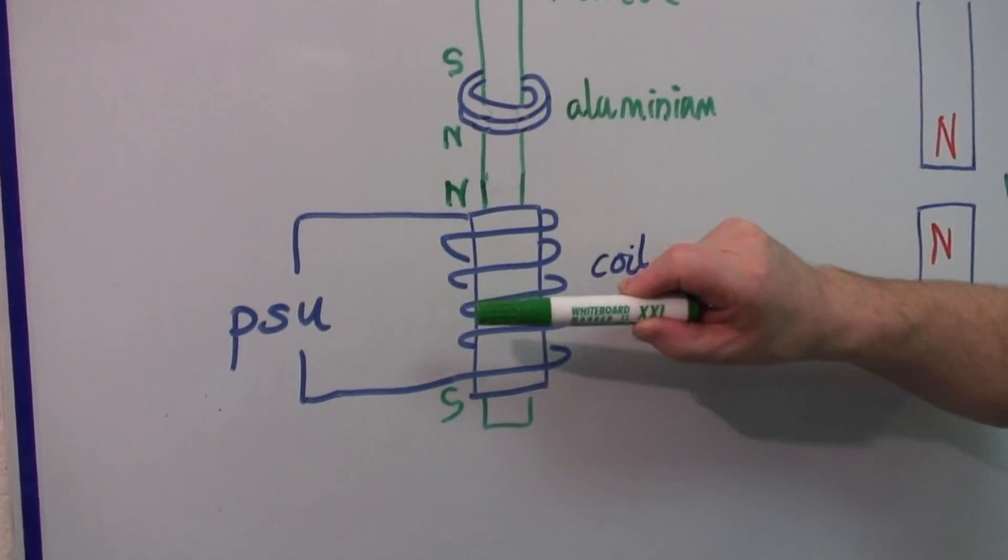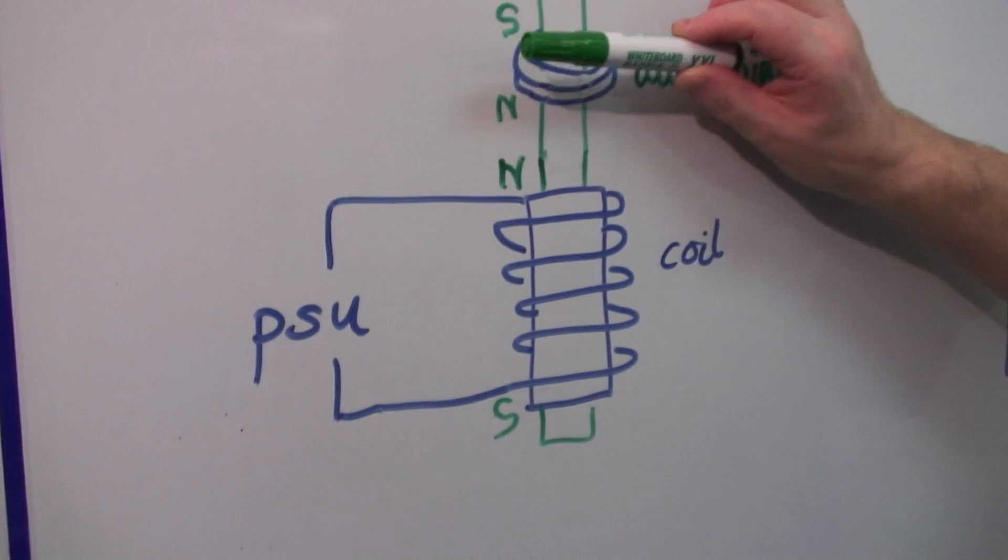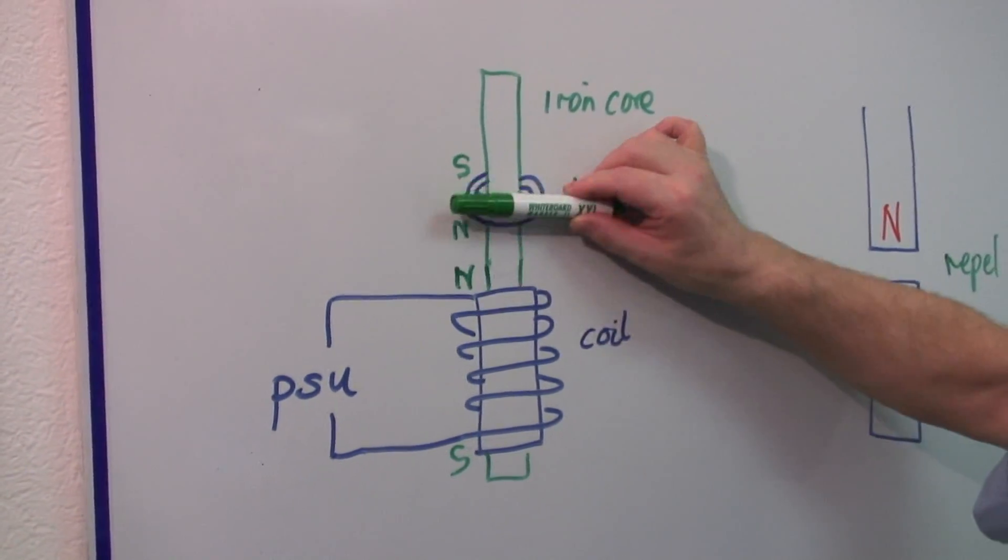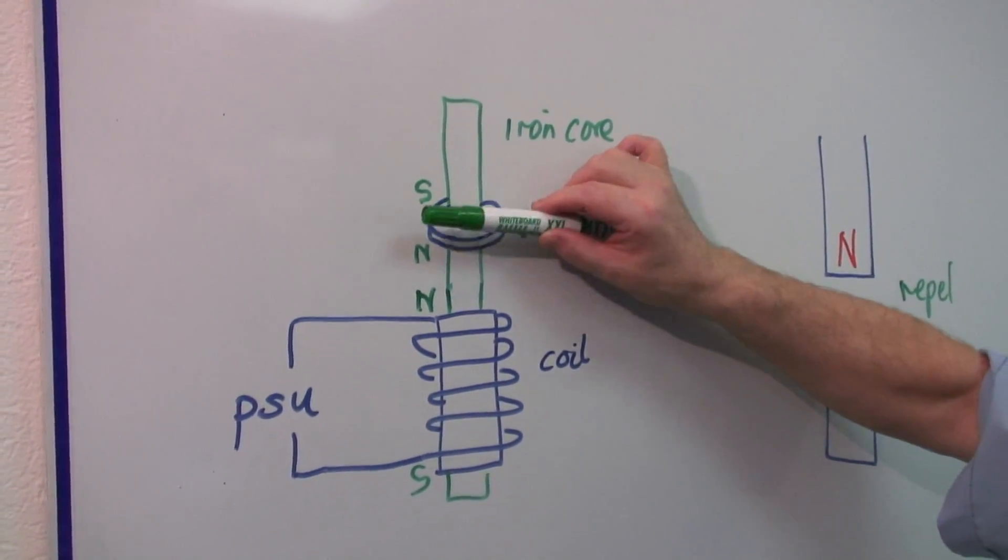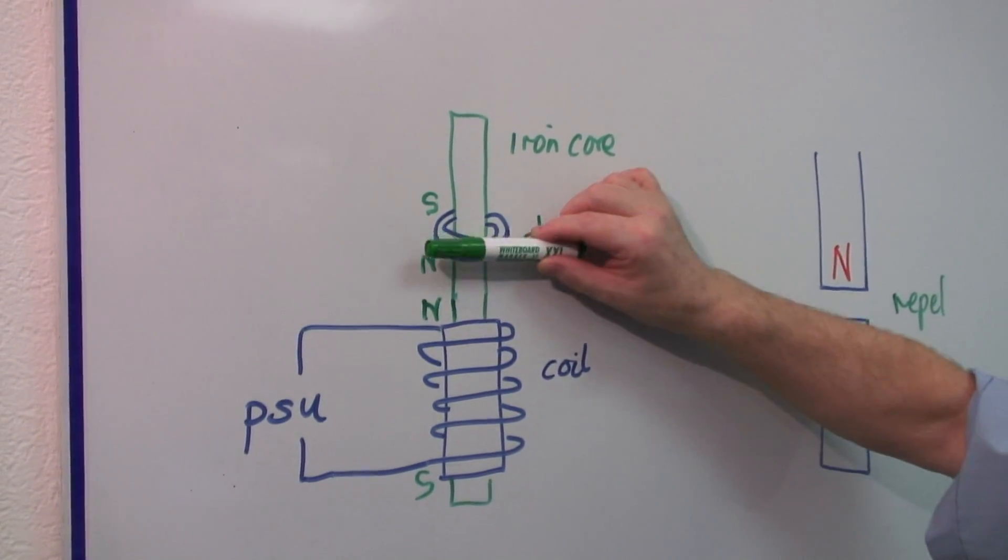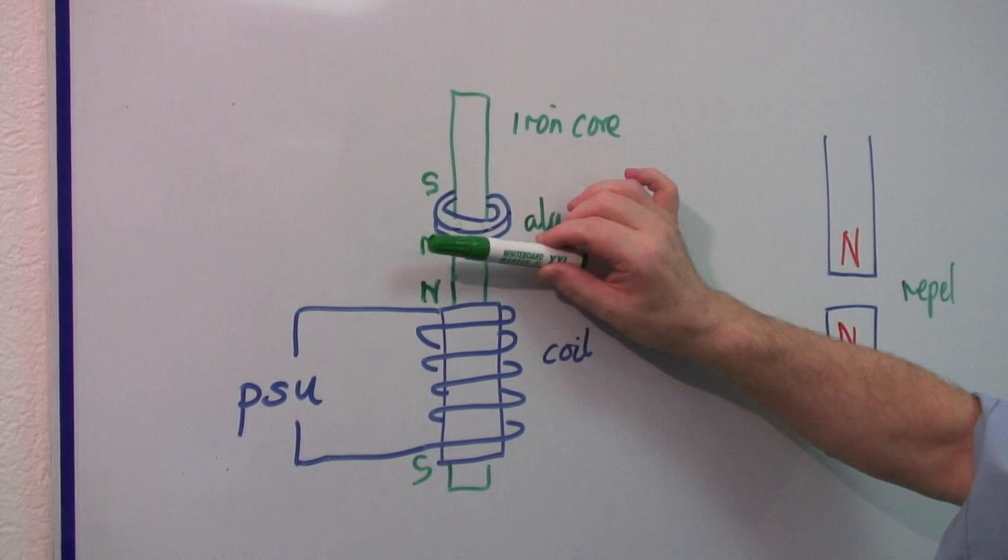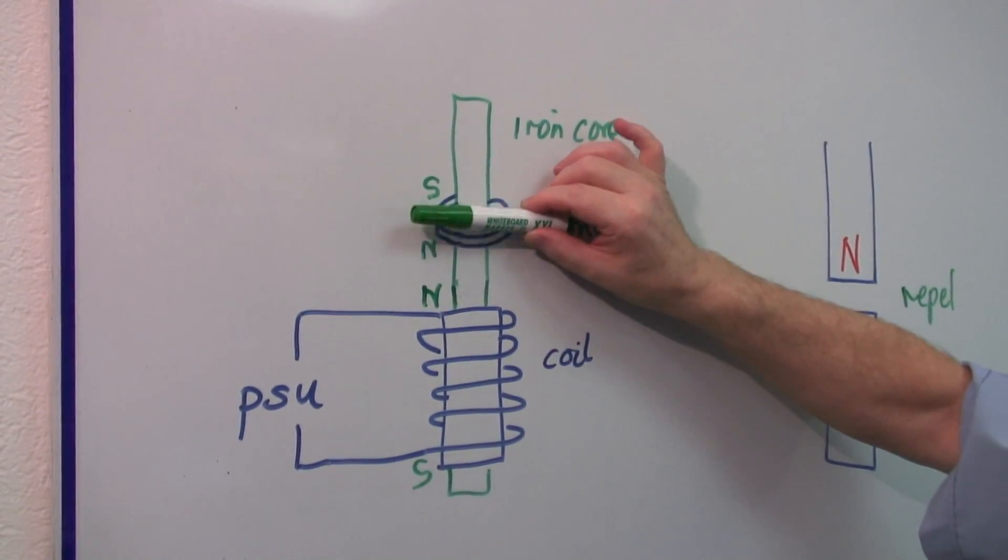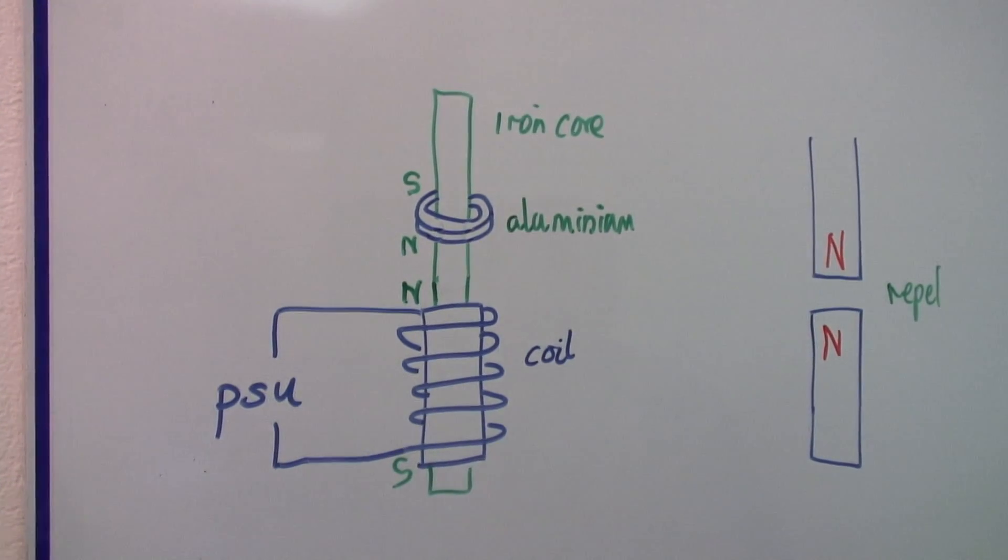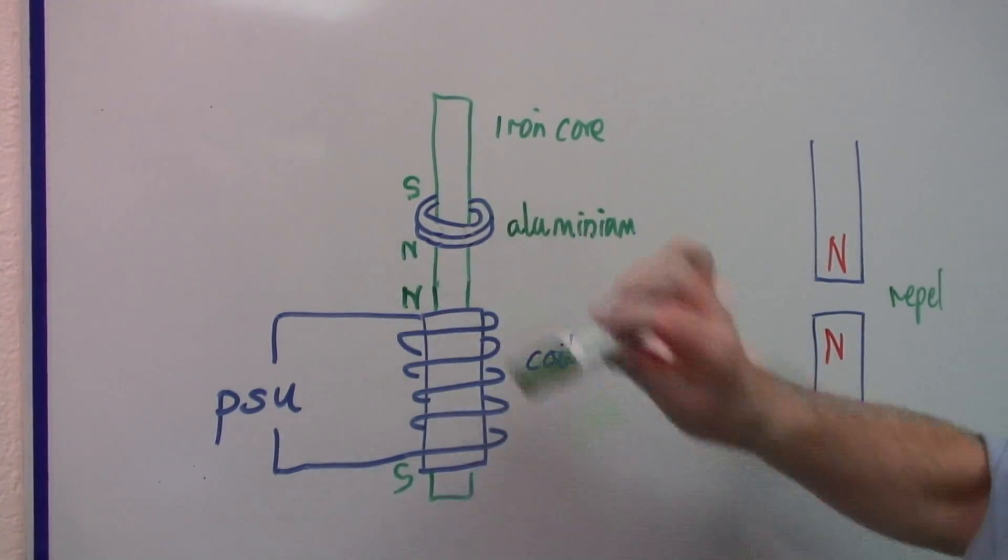That means that when I switch this on, this will move up here and it will move up only as far as say there. Because if it went further the force gets smaller. If it gets closer the force gets bigger. So it finds a balancing point and at that point it will stay. And that is our levitation.